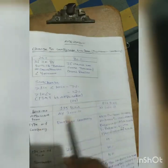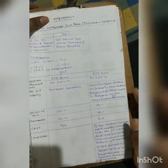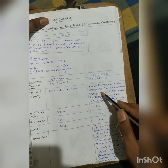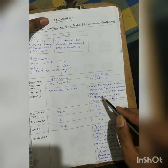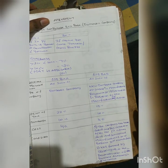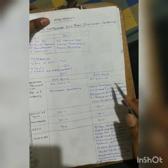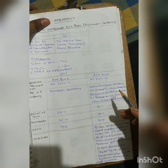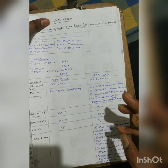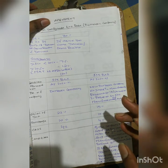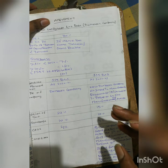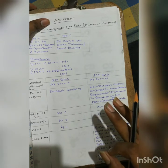Section 115BAB is allowed only to a new domestic company engaged in manufacturing, or in research and development relating to manufactured articles, or in distribution of manufactured articles. It is applicable only to these three types of companies.